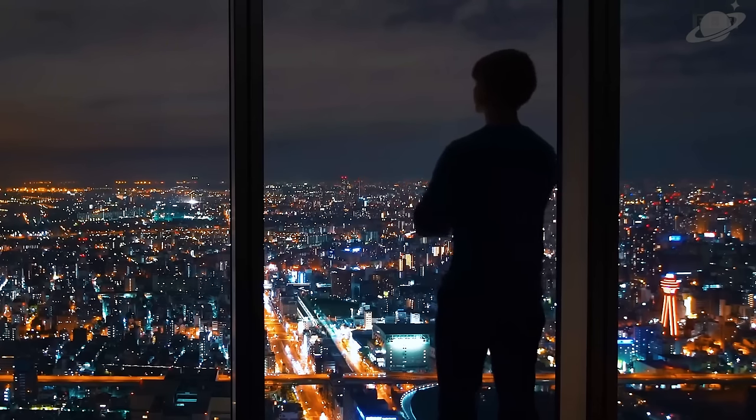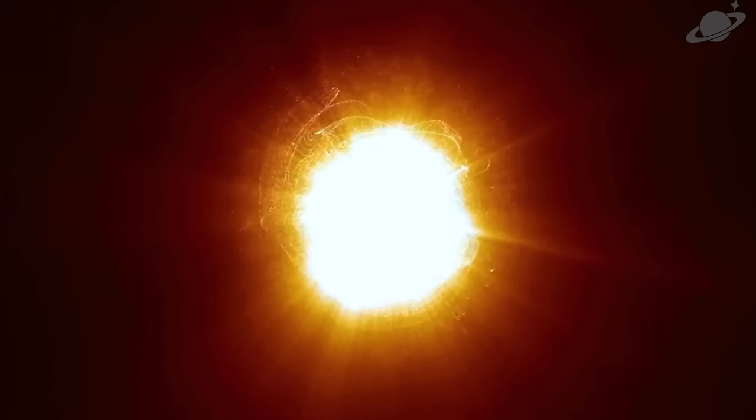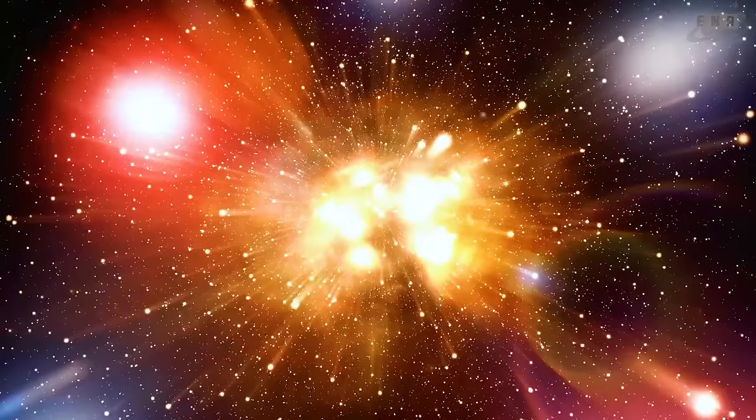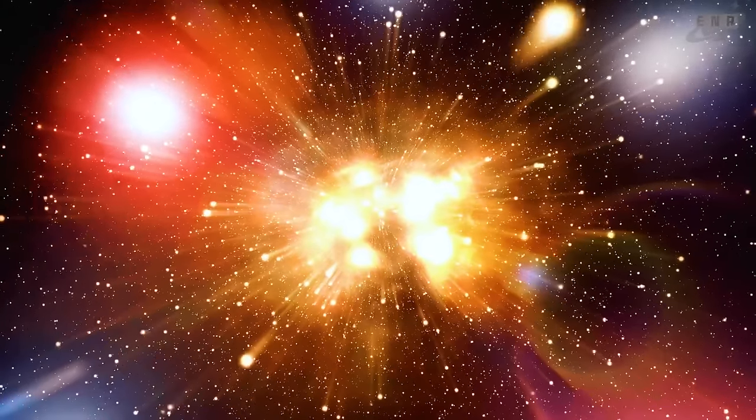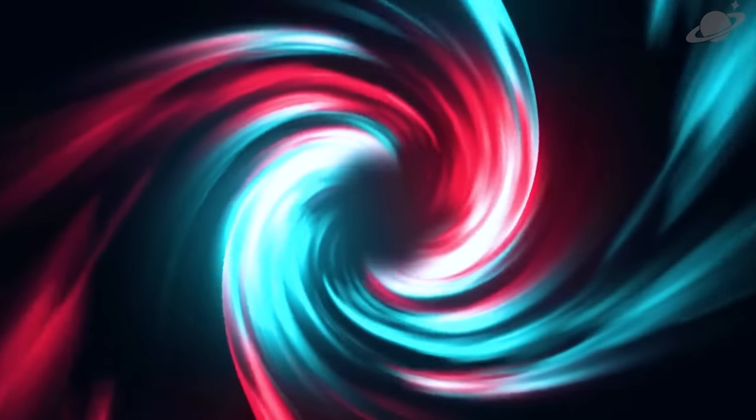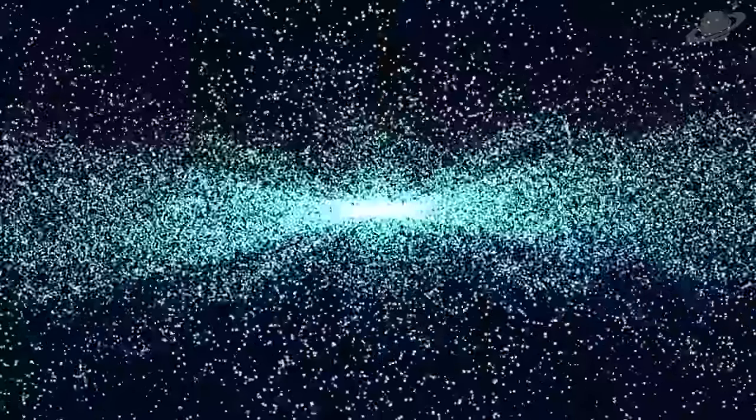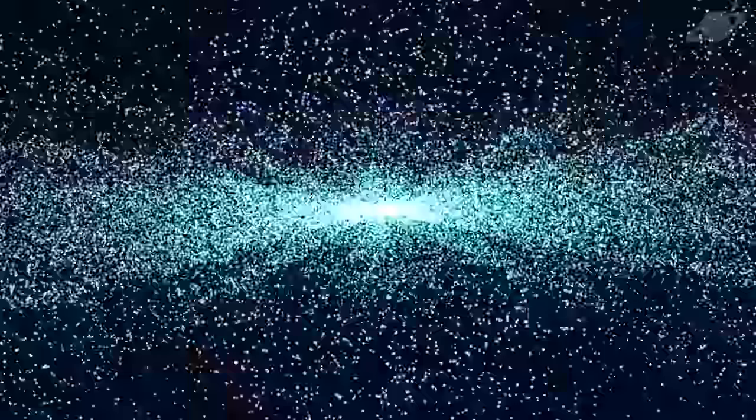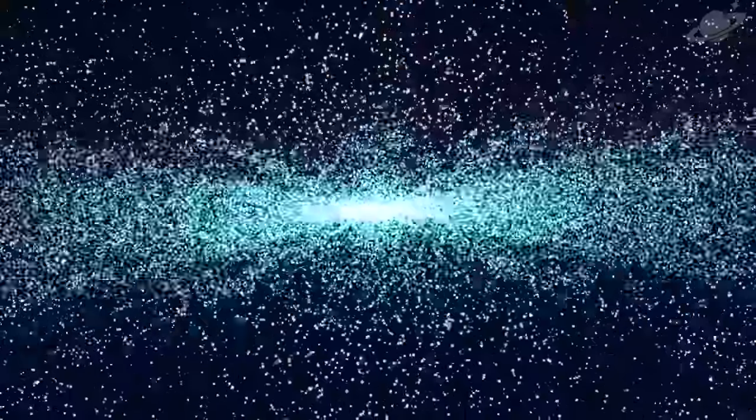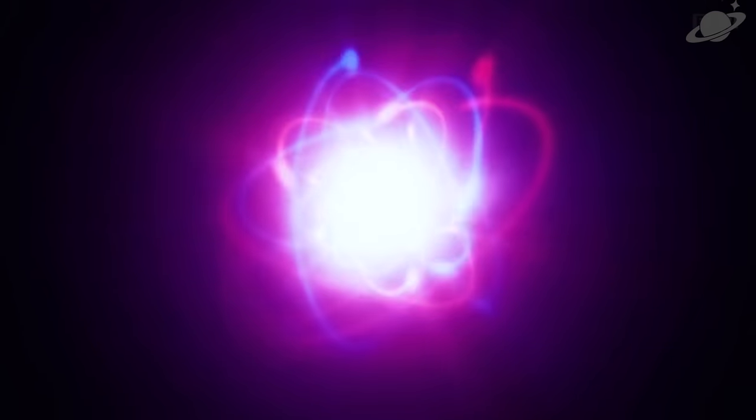As the universe expanded and cooled, it provided an environment where quarks could merge into protons and neutrons. About one second after the Big Bang, the cosmic neutrino background emerged, although it remains undetected by scientists. This phenomenon occurred when the density of the cosmos had decreased enough for neutrinos to traverse space without interacting with other matter. Within the first three minutes of the universe's existence, the fusion of protons and neutrons produced the hydrogen isotope deuterium, along with helium and a small amount of lithium. However, this fusion process ceased as temperatures dropped.